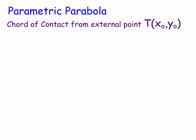The chord of contact is basically when you're standing at a point outside the parabola, T at (x0, y0), and you're firing off two tangents — they hit the parabola, then you draw a line between those two points of intersection and form what's called the chord of contact.